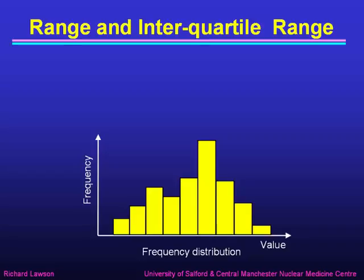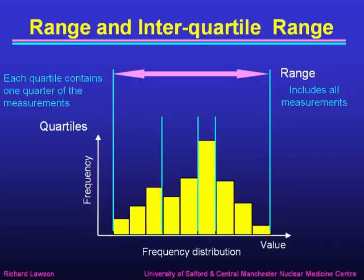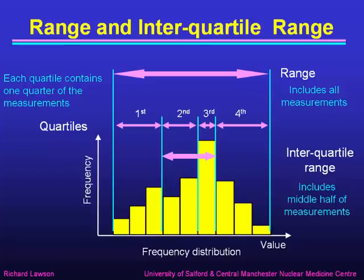Let's look at the range and interquartile range first. Here's a frequency distribution, and the range has to include all measurements from the smallest to the largest. We can split the data into quartiles, each containing one quarter of the measurements. The blue lines split the data into four regions, each with the same number of measurements — the same area of yellow blocks. To get the interquartile range, we throw away the first and the fourth quartile, and what's left, including just the middle half of the measurements, is the interquartile range.